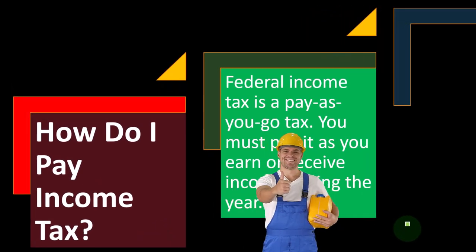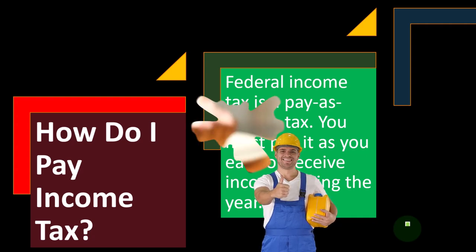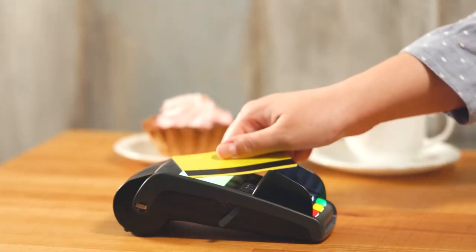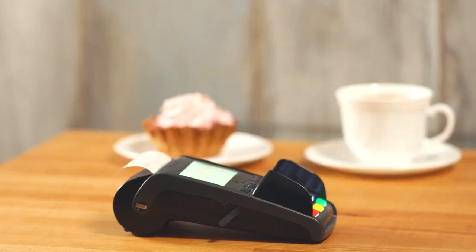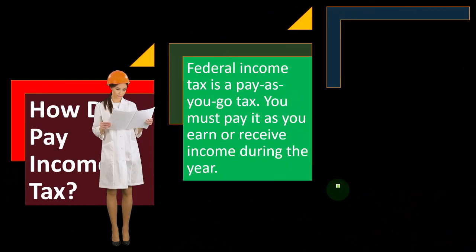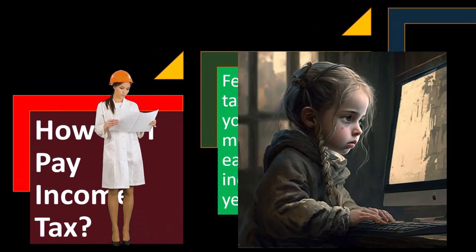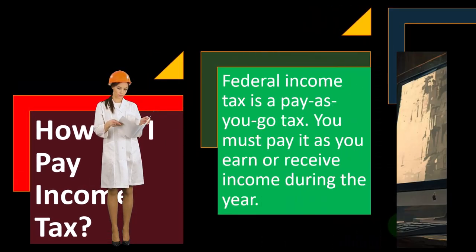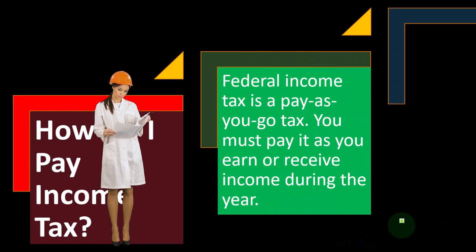When people move from a W-2 system — where they're forced into the pay-as-you-go system — to a Schedule C type of business, they no longer have anybody forced to act as their tax collector. People often don't do the projections to figure out what their taxes will be for the Schedule C business, and they get behind on their taxes.